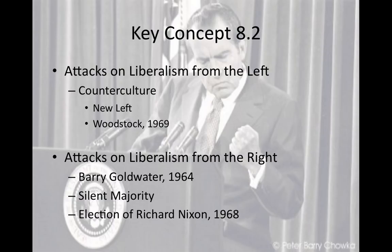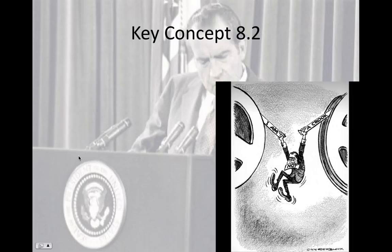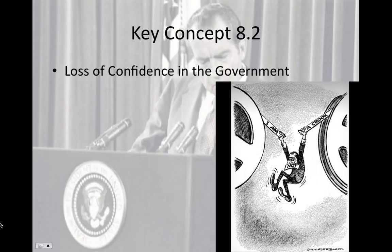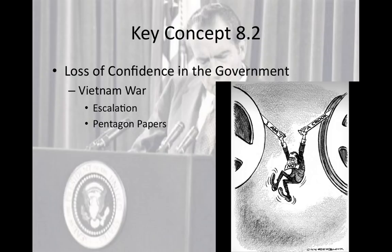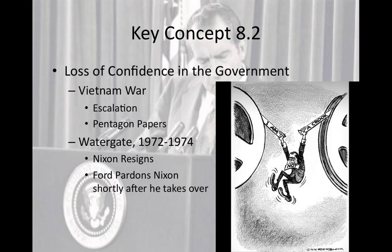This period saw a significant loss of confidence in government, evidenced by the Vietnam War's escalation. The Pentagon Papers, leaked to the press, showed the government had been lying about Vietnam for years. Nixon was paranoid about leaks, which is why he had tapes installed at the White House recording all conversations — which eventually led to the Watergate conspiracy of 1972 to 1974. Watergate involved Nixon cheating in the 1972 election and trying to cover it up, leading to his resignation. When Gerald Ford pardoned Nixon, there was a public outcry that government was no longer reliable.